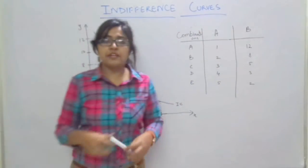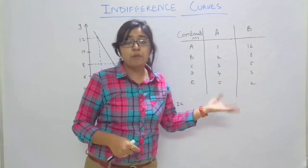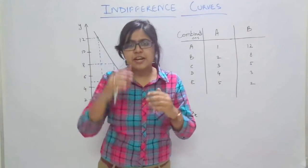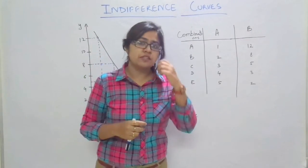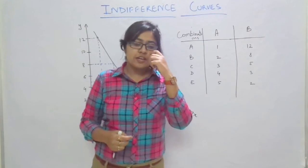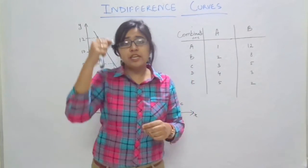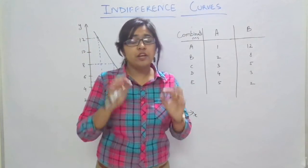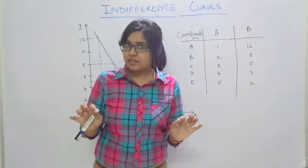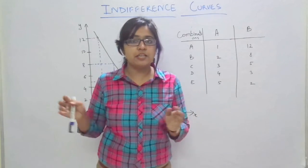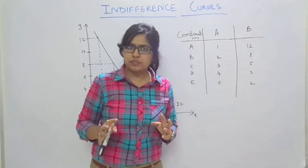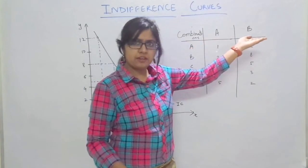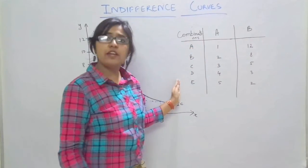I have made a schedule — the tabular form of combinations of various goods — and there's a graph too. Let's first understand what an indifference curve is and what it shows. An indifference curve shows the various combinations of two goods giving the consumer equal amount of satisfaction, that is equal amount of utility. Let's take an example of two goods: Good A and Good B.